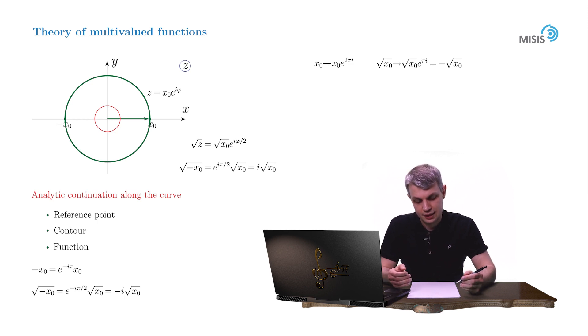Let's try to figure out the origin of this problem. Well, it's almost clear. The culprit is the change of the argument of the number under the square root by 2π. Indeed,